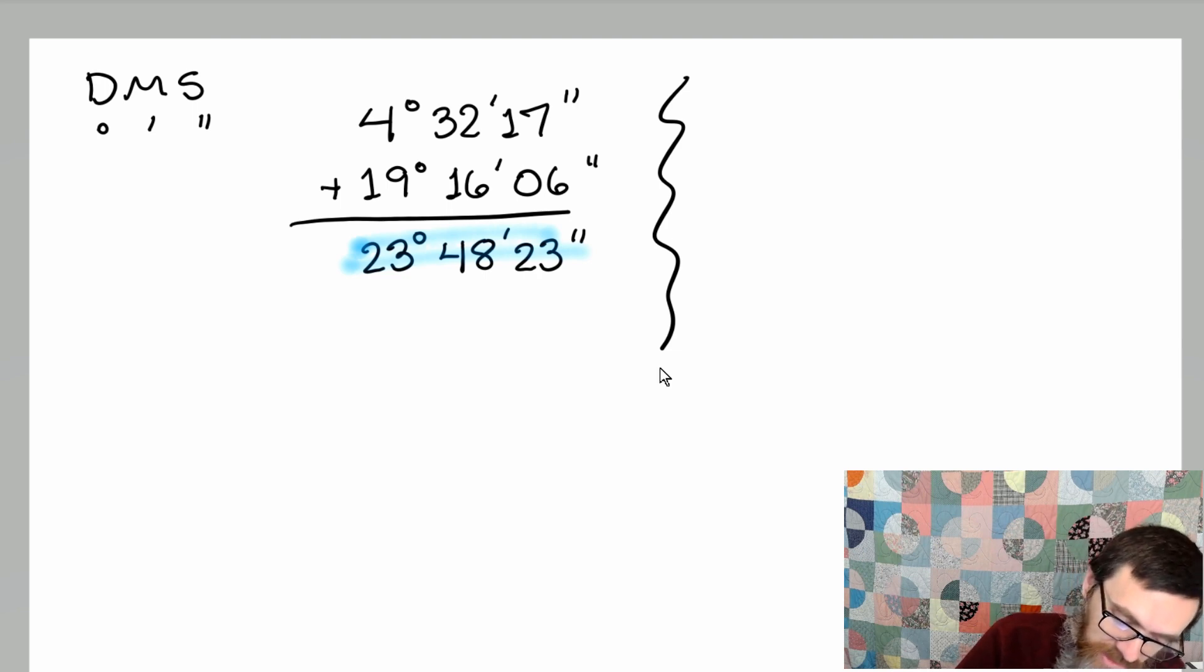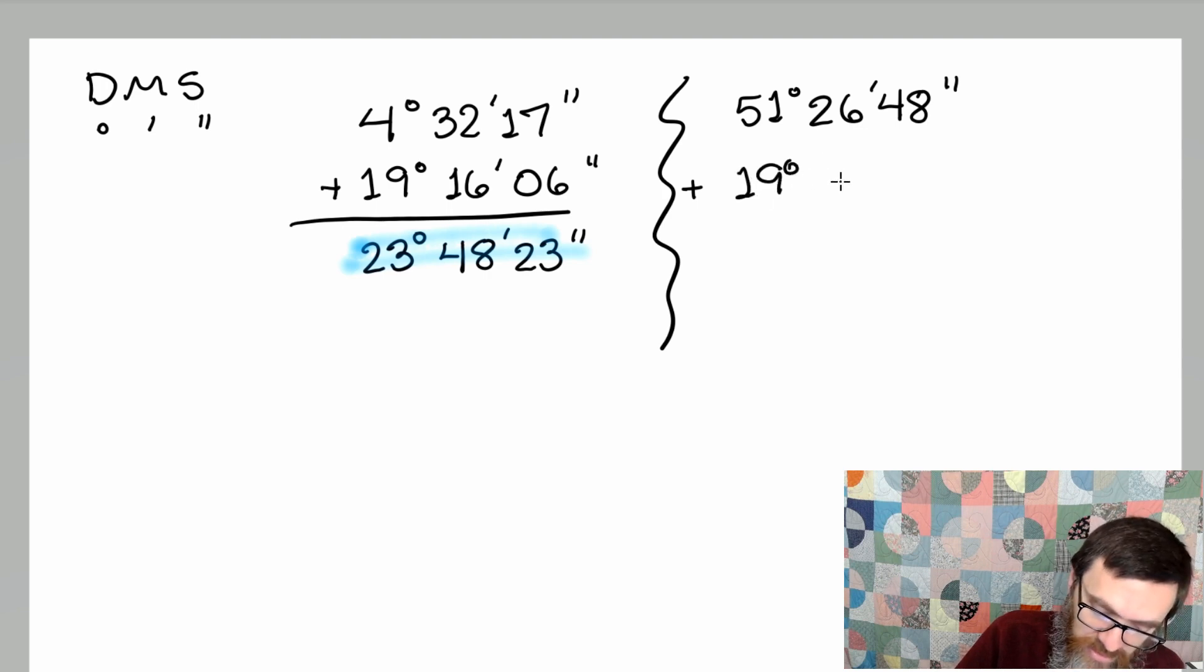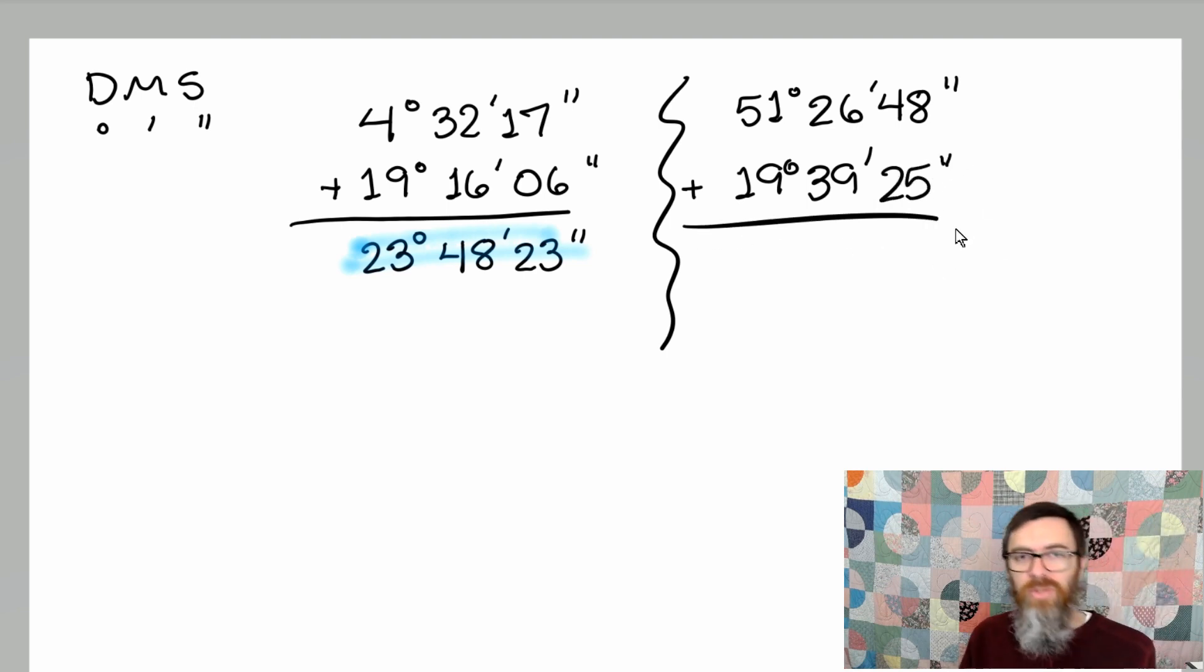Let's take this next example. 51 degrees, 26 minutes, 48 seconds, plus 19 degrees, 39 minutes, and 25 seconds. Do the same thing as we did before, and let's see what happens here.